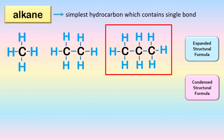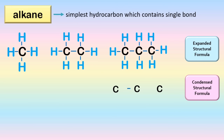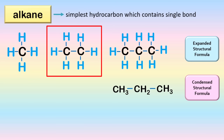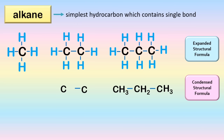To write a condensed structural formula, we first write the carbon, then count how many hydrogen atoms are bonded to that carbon. For the first carbon we have three, so we write CH3. For the second carbon we have two hydrogen, so we write CH2. For the third carbon we write CH3 since we have three hydrogen atoms. For a two-carbon example, each carbon has three hydrogen, so we write CH3CH3. And for a single carbon it is simply CH4.